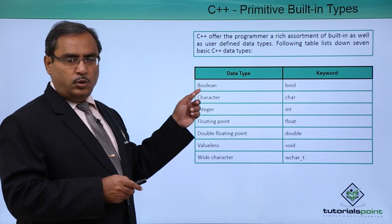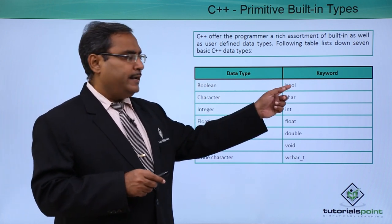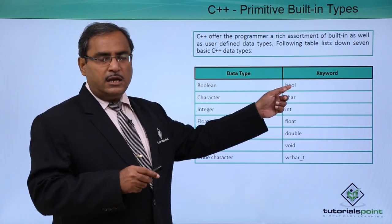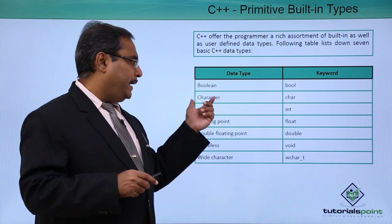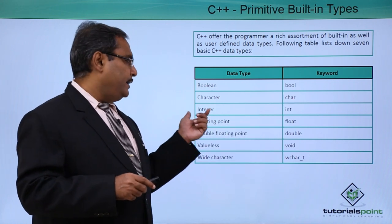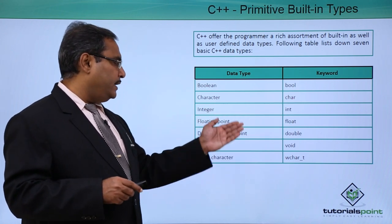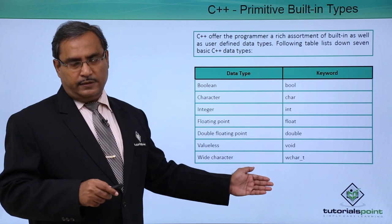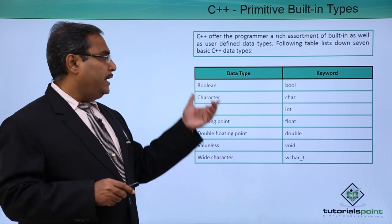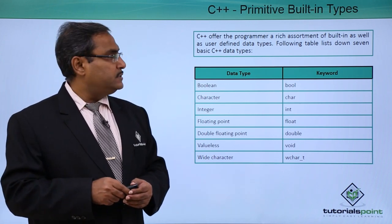Boolean will be written as bool in our C++ coding as a keyword, character will be expressed as char, integer will be expressed as int, and these are the other respective keywords that you are going to use against these data type names.